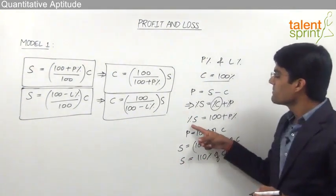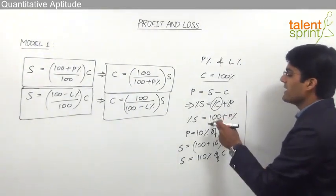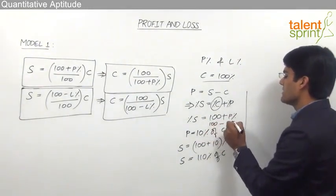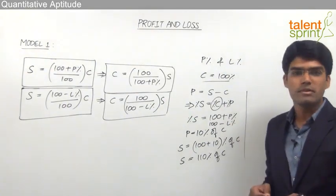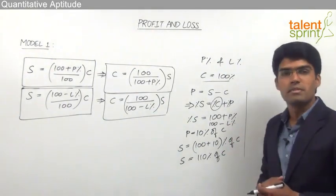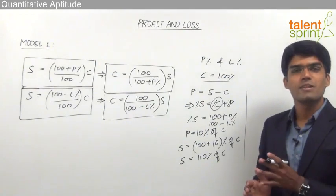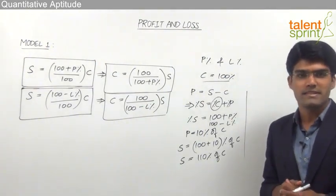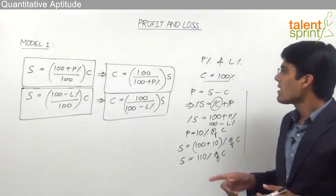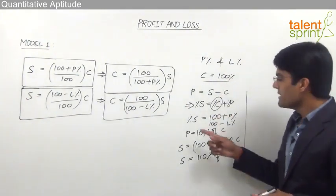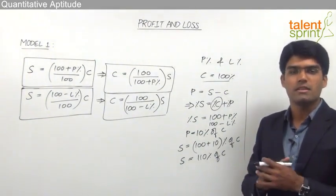So we can always take selling price in terms of percentage as 100 + profit%. And if there is a loss, selling price can be taken as 100 − loss%. For example, if there is a loss of 10%, selling price = 100 − 10 = 90% of cost price. If there is a loss of 15%, selling price = 100 − 15 = 85% of cost price. So simply remember: cost price = 100%, and selling price = 100 + profit% or 100 − loss%, all with respect to cost price.